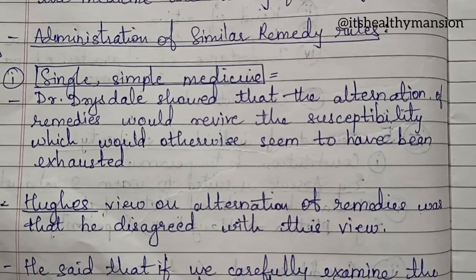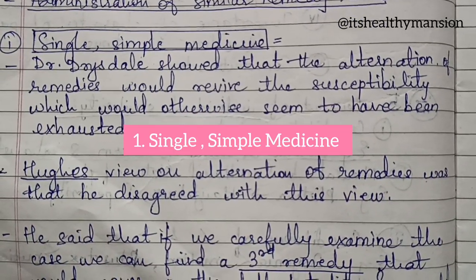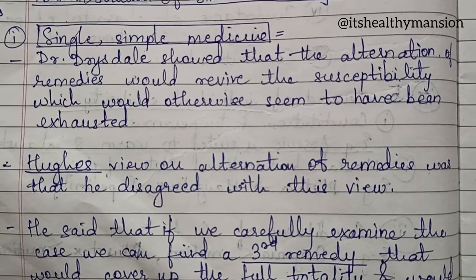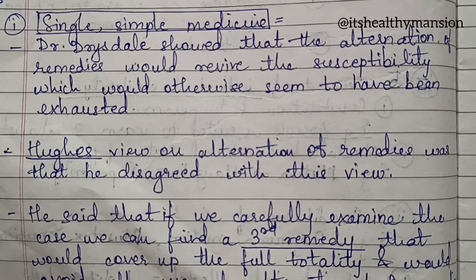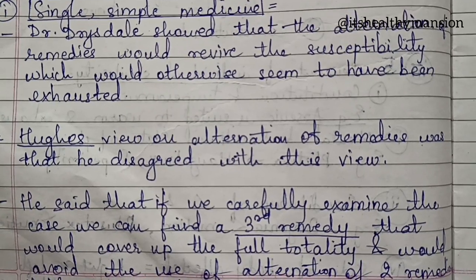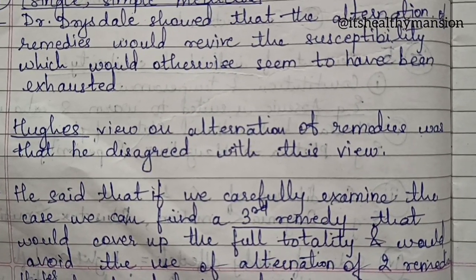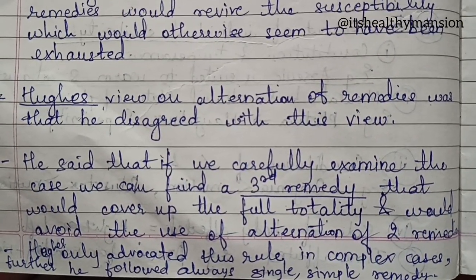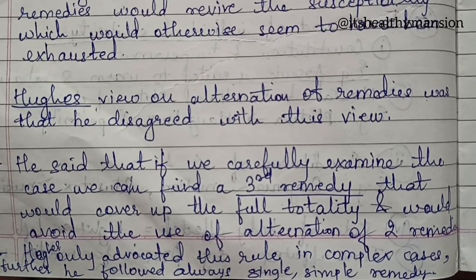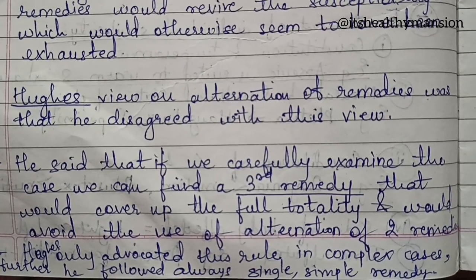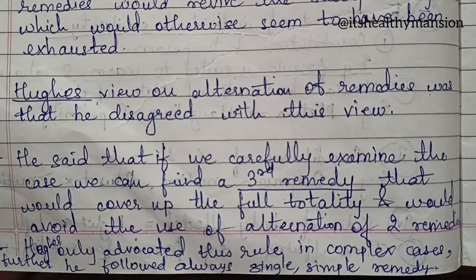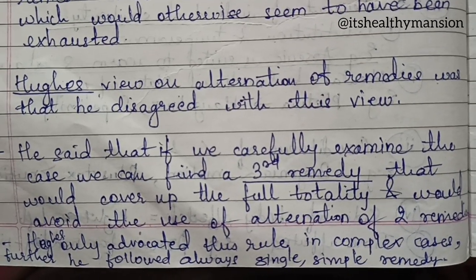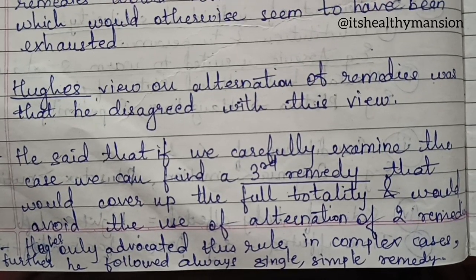Administration of similar remedy rules. First point: single, simple medicine. Dr. Drysdale showed that the alternation of remedies would revive the susceptibility which would otherwise seem to have been exhausted. Uges' view on alternation of remedies was that he disagreed with this view. He said that if we carefully examine the case, we can find a third remedy that would cover the full totality of symptoms and would avoid the use of alternation of two remedies. Uges only advocated this rule in complex cases, but otherwise always followed the single, simple remedy.